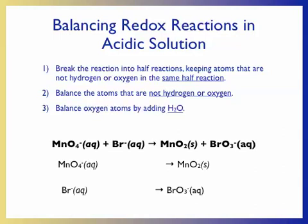Our next step is to begin balancing oxygen atoms. We do this by adding water molecules to the side of the half-reaction that contains fewer oxygen atoms. For the first half-reaction, we add two water molecules to the right-hand side, bringing the total oxygen atoms on both sides to four. For the second half-reaction, we add three water molecules to the left-hand side, giving three oxygen atoms on both sides.